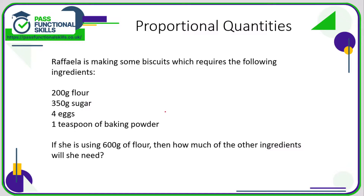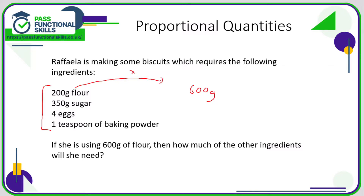Let's take a look at proportional quantities. Rafael is making biscuits and the recipe calls for 200g flour, 350g sugar, 4 eggs, and a teaspoon of baking powder. She's using 600 grams of flour, and we know that 600 is three times greater than the 200 in the recipe.